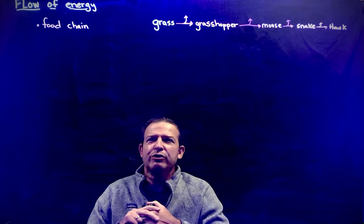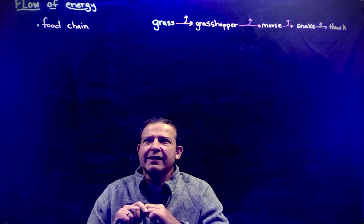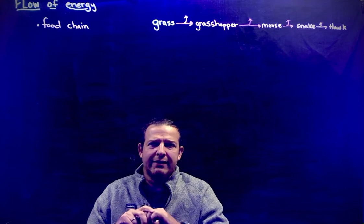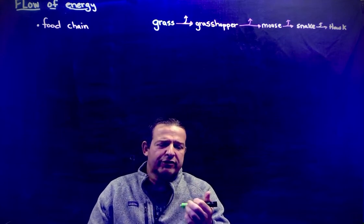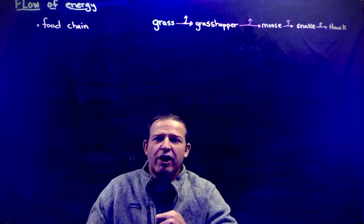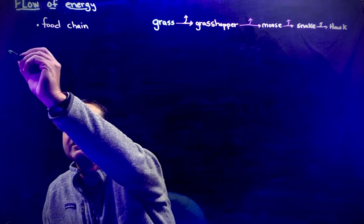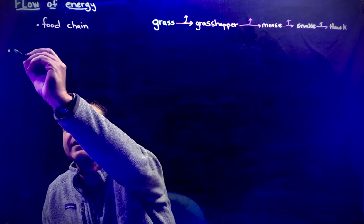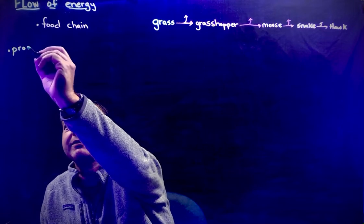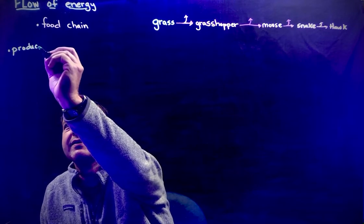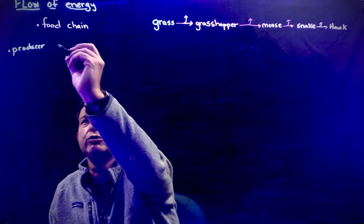Usually when you're looking at the flow of energy, you're looking at a food chain. The first thing you need to know about a food chain is that they always start with a producer. That's what they always have to start with. And a producer might be called an autotroph.